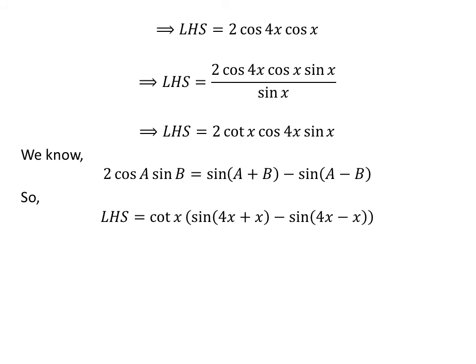Applying this identity, the left-hand side equals cotangent of x times the quantity sine of (4x + x) minus sine of (4x − x). Further simplification gives the left-hand side equal to cotangent of x times the quantity sine of 5x minus sine of 3x, which equals the right-hand side of the given equation. So we have proved the given equation.